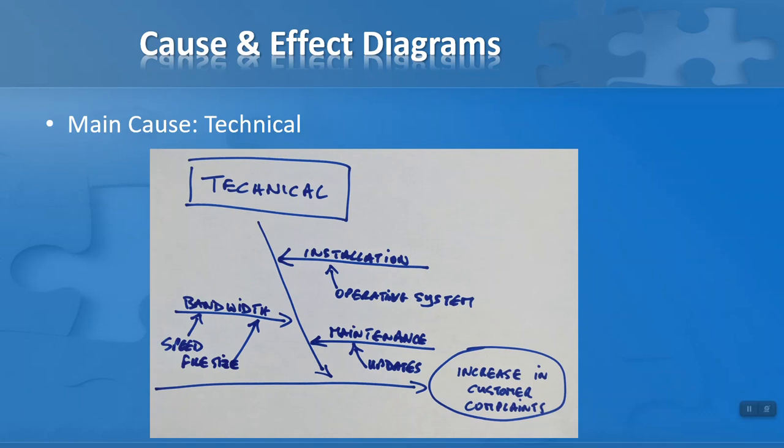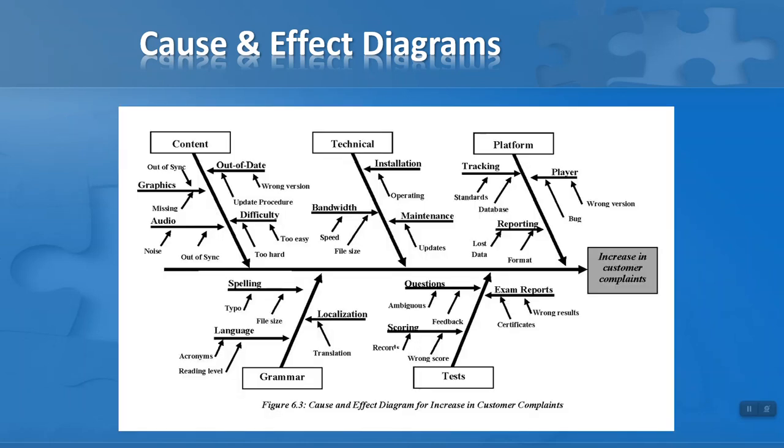In our lesson that follows, I will walk you through the other four categories to create this diagram. This is the finished diagram here. You can see that I have lots of different primary and secondary causes, so I'll explain to you what all of this means.